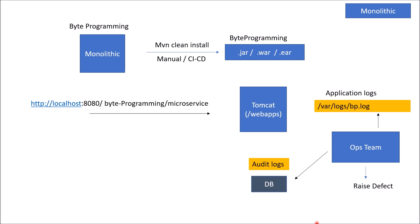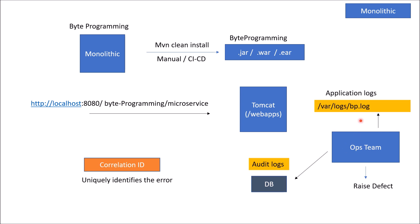Once the operations team encounters an error, they are going to raise a defect. Now bp.log is containing a huge amount of logs generated by the application deployed inside Tomcat. For a particular error and its stack trace, how is the operations team going to find data from this log file? In order to do that, whenever an error comes, we uniquely identify that error and its stack trace with an ID. This ID is generally called a correlation ID, and it uniquely identifies the error. The operations team will search for that correlation ID inside bp.log and it will give the stack trace of that error.